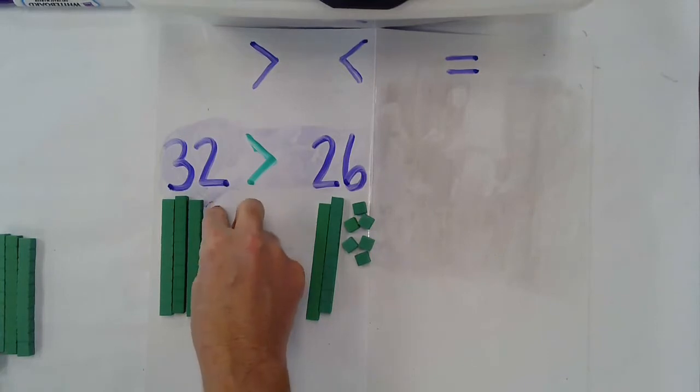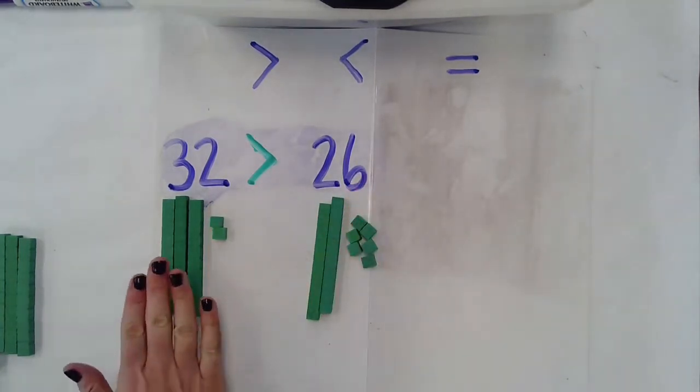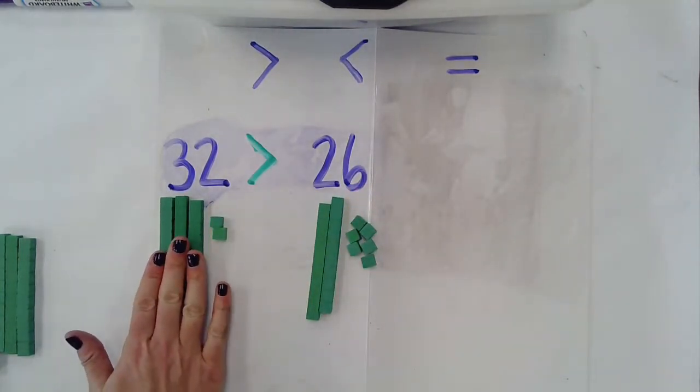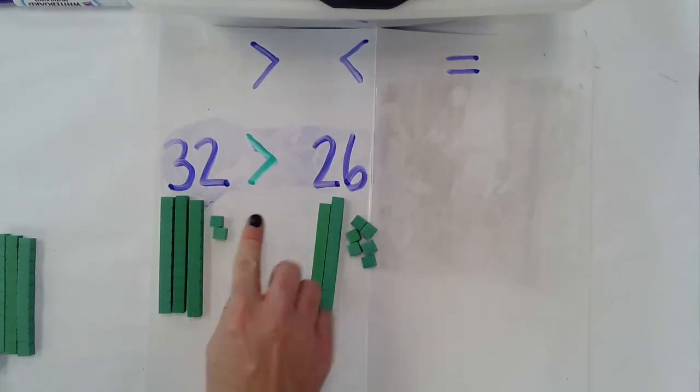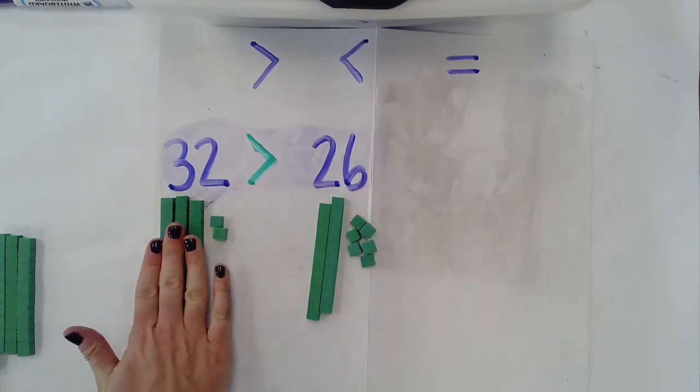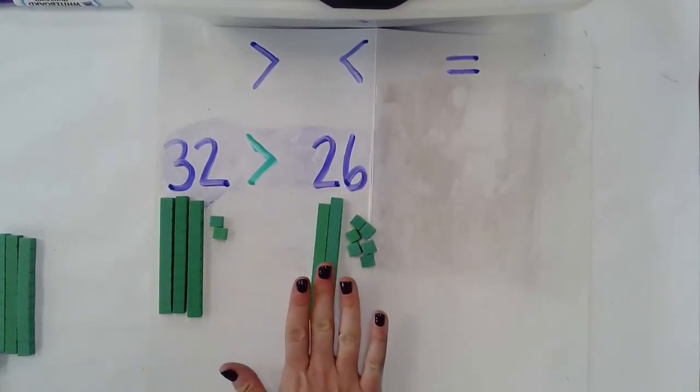Now do note why I didn't really look at the ones place because once I had figured out that this had more tens, there was no need to really look at the ones place. Even though I have two ones here and six ones, the 3 tens was still greater than the 2 tens.